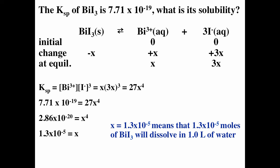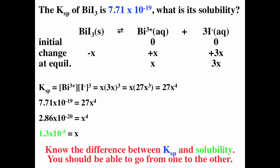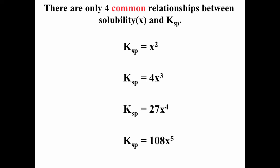This x equals 1.3 × 10⁻⁵ mol/L is the solubility, which also equals the bismuth concentration at equilibrium; three times that is the iodide concentration. Please don't confuse solubility and Ksp. There are only four common Ksp–solubility relationships for ionic solids: Ksp = x², Ksp = 4x³, Ksp = 27x⁴, or Ksp = 108x⁵.